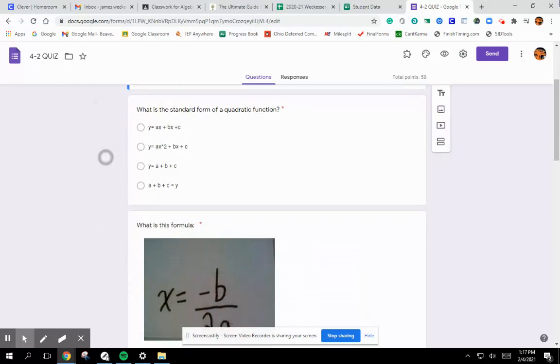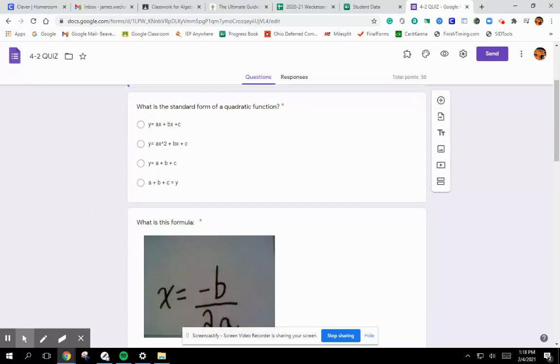There's five questions like our standard quiz. The first question is, what is the standard form of a quadratic function? And this is on the board right next to you. If you look on the board, it'll have standard form. You should be able to answer that very easily.